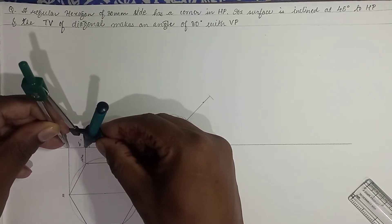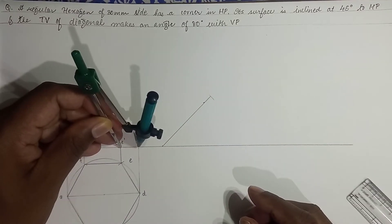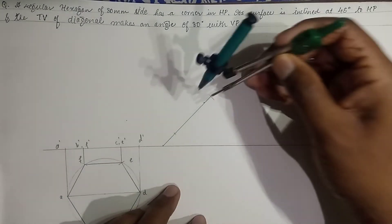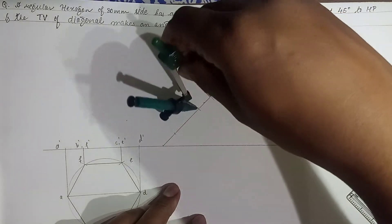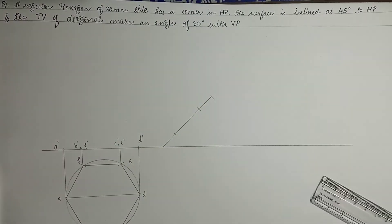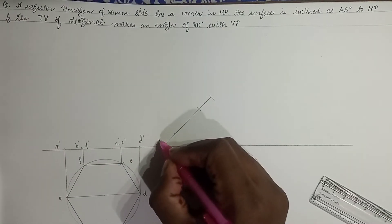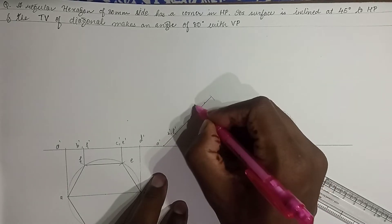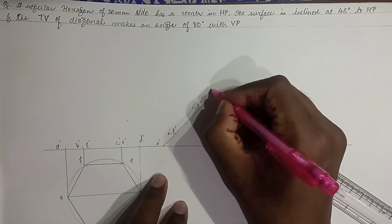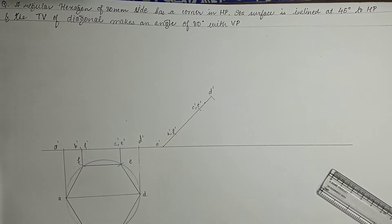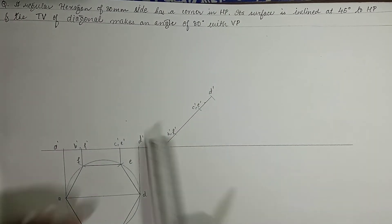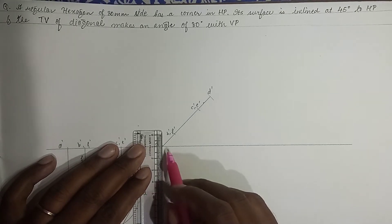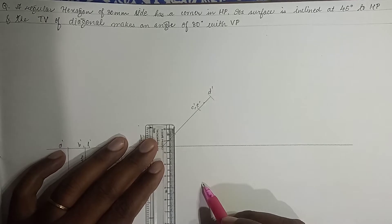This distance should be logically equal to the previous distance. Mark from this end and from this end, and label the points: A dash, B dash comma F dash, C dash comma E dash, and D dash. With the help of projectors, we project them into the top view to get the apparent shape.